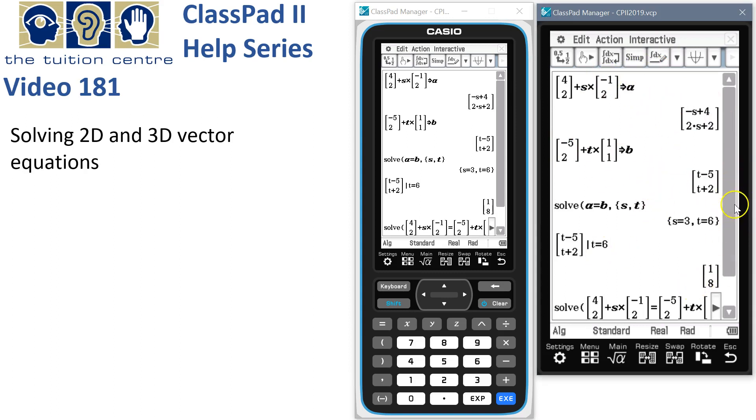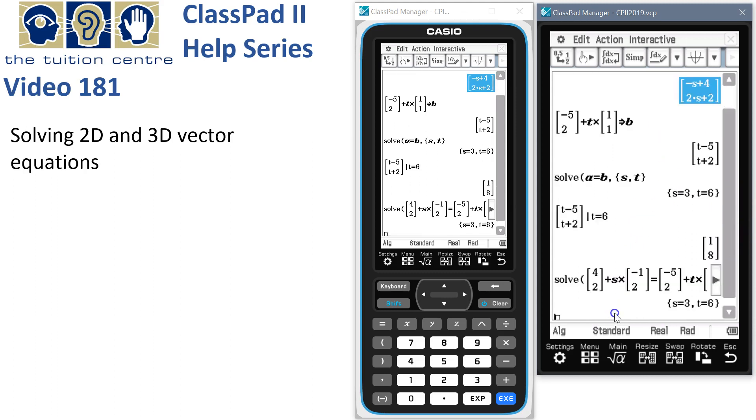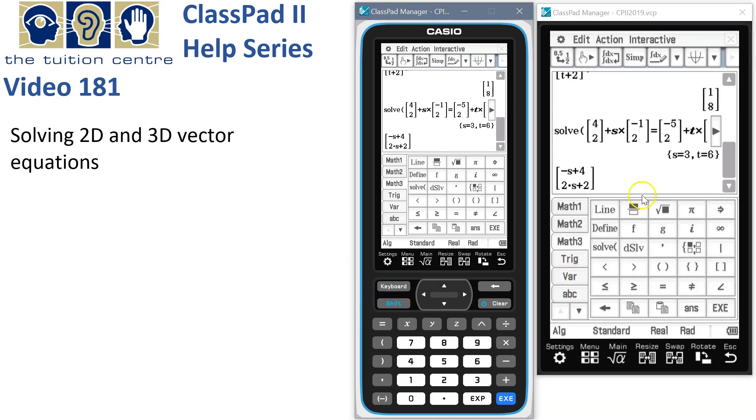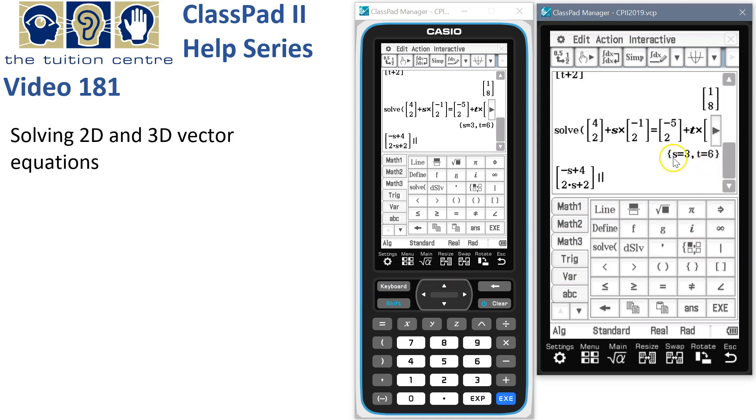Obviously it's at 1, 8. We could have also solved for S. If I grab a copy of this, drop it in there and do the same thing. From the keyboard, given, S is equal to 3.